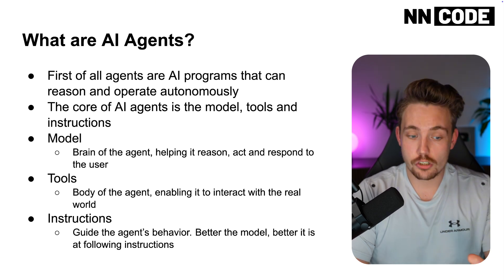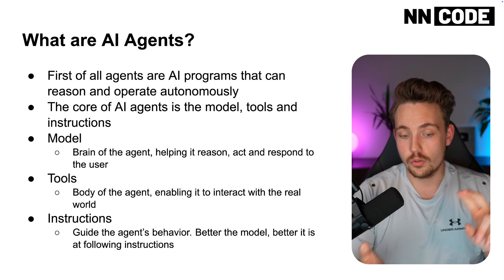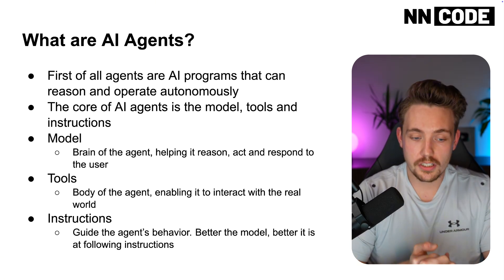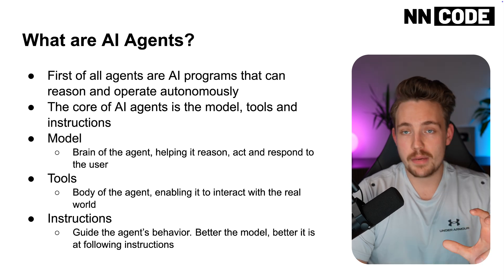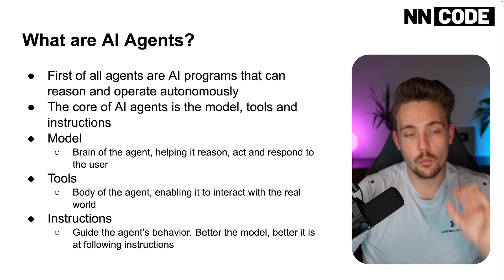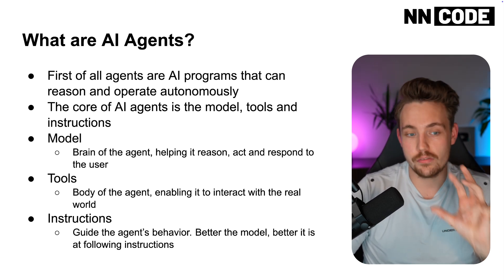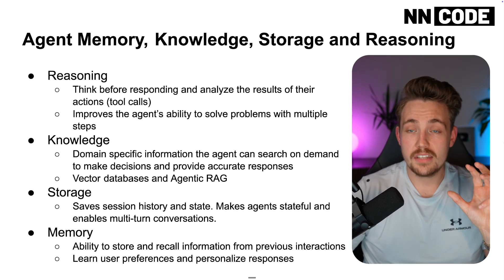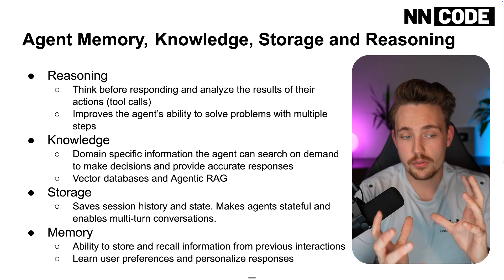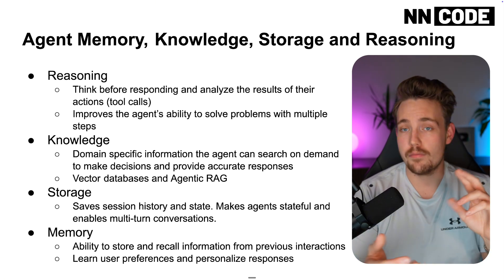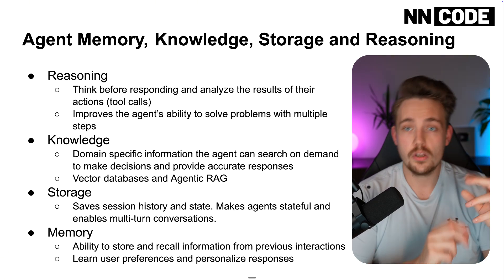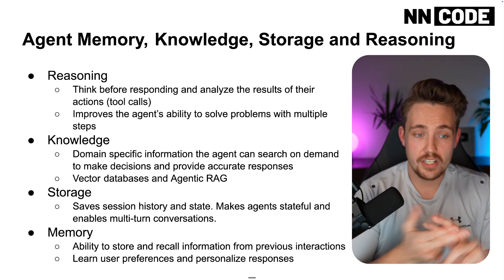The last of the three main parts is instructions — we can guide the agent's behavior. The better the model, the better it follows instructions, which is logical. The agent can do reasoning and choose the tools it wants. This is the most essential part when talking about AI agents — what we're wrapping around the LLM. For AI agents, we also have agent memory, knowledge, storage, reasoning, and so on that we build around it. We can build software systems and have multiple agents working together, moving beyond just a chain of LLM calls.